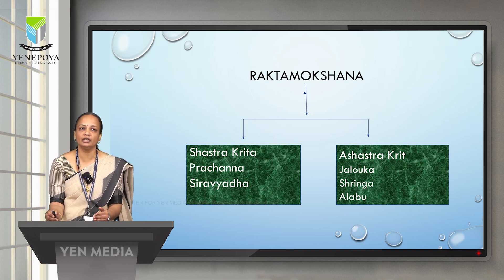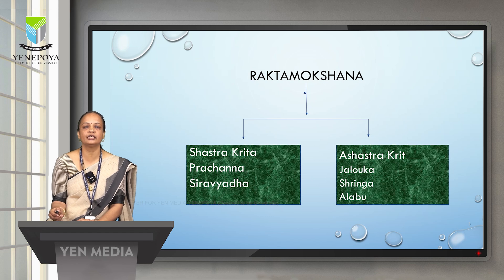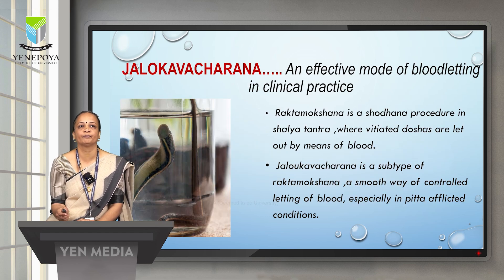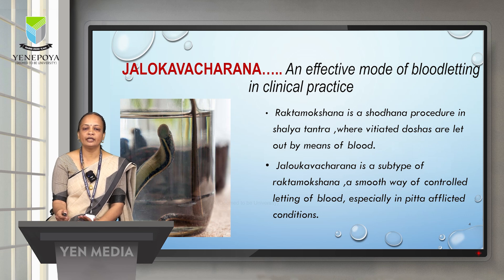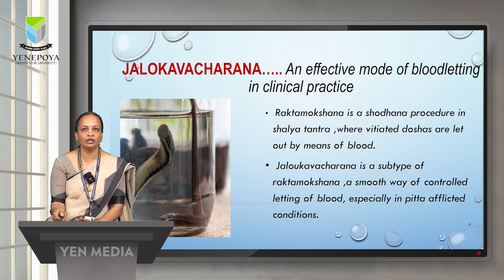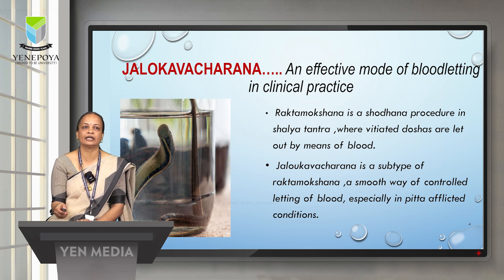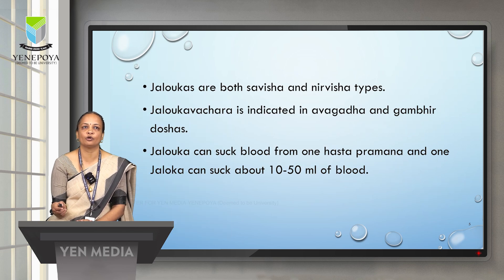Under Shastrakruta, we have Prachanna (puncturing) and Siraveda (venesection). Under Ashastrakruta, we have Jalokavacharana, that is leech therapy — which is what we are discussing today. Jalokavacharana is an effective mode of bloodletting in clinical practice, a Panchashodhana procedure where vitiated doshas are let out by means of blood, especially applied in Pitta-afflicted conditions.